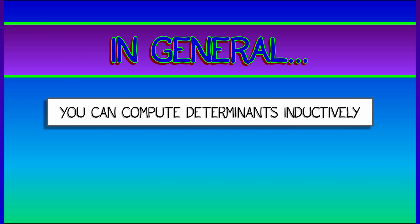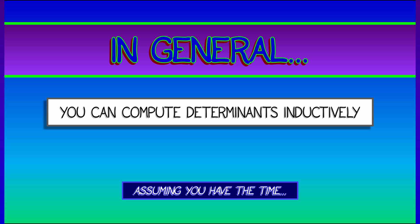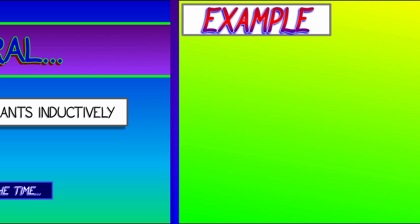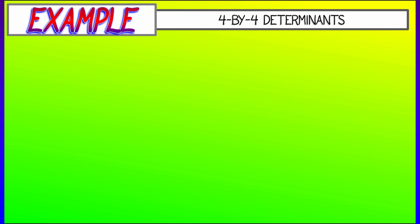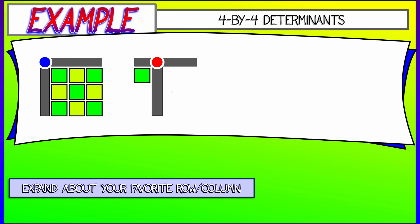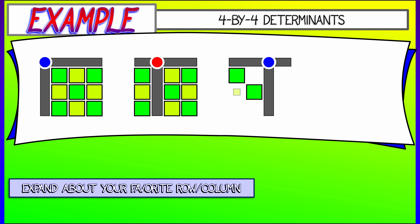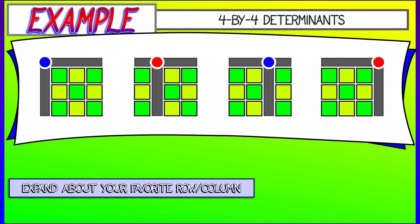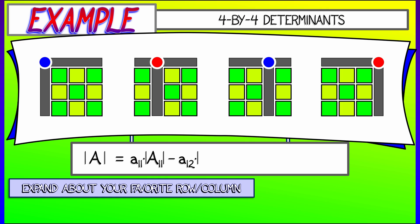This is great because if you've got 3x3 determinants down, then you can compute determinants inductively in any dimension, assuming you have the time. For example, in the case of a 4x4 matrix, you pick your favorite row or your favorite column. Let's say we expand about the first row. So you take A11, then minus A12, then plus A13, then minus A14. And in each case, you're using the 3x3 determinant of the associated minors. And since you know how to compute 3x3 determinants, now you're all set.